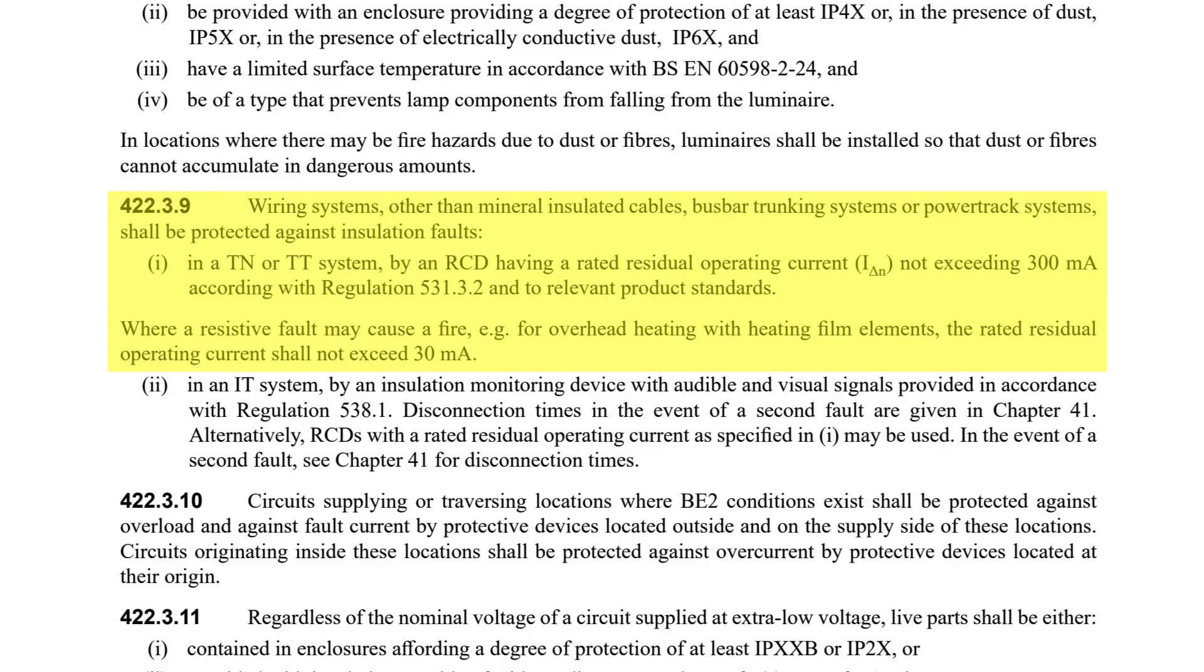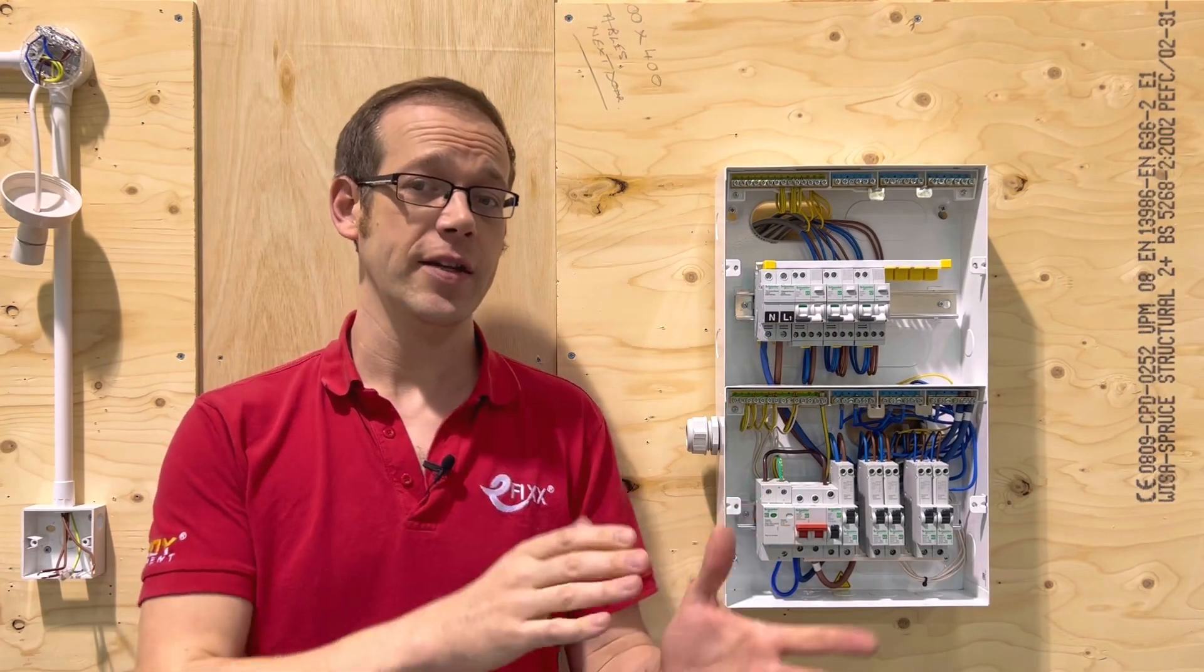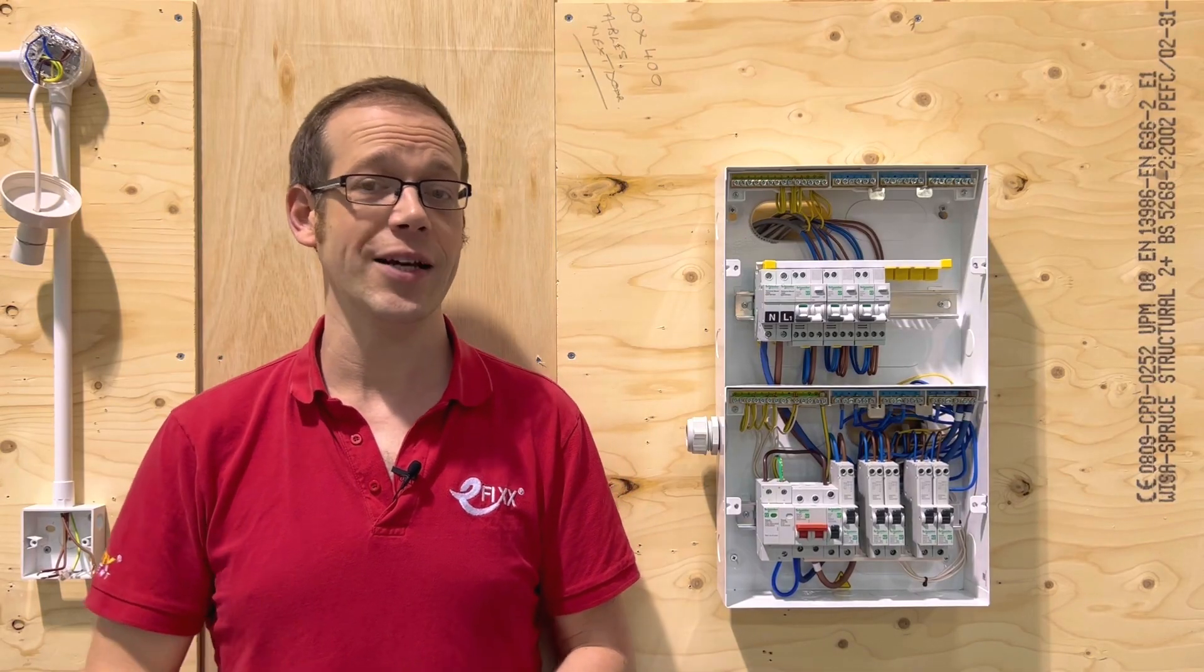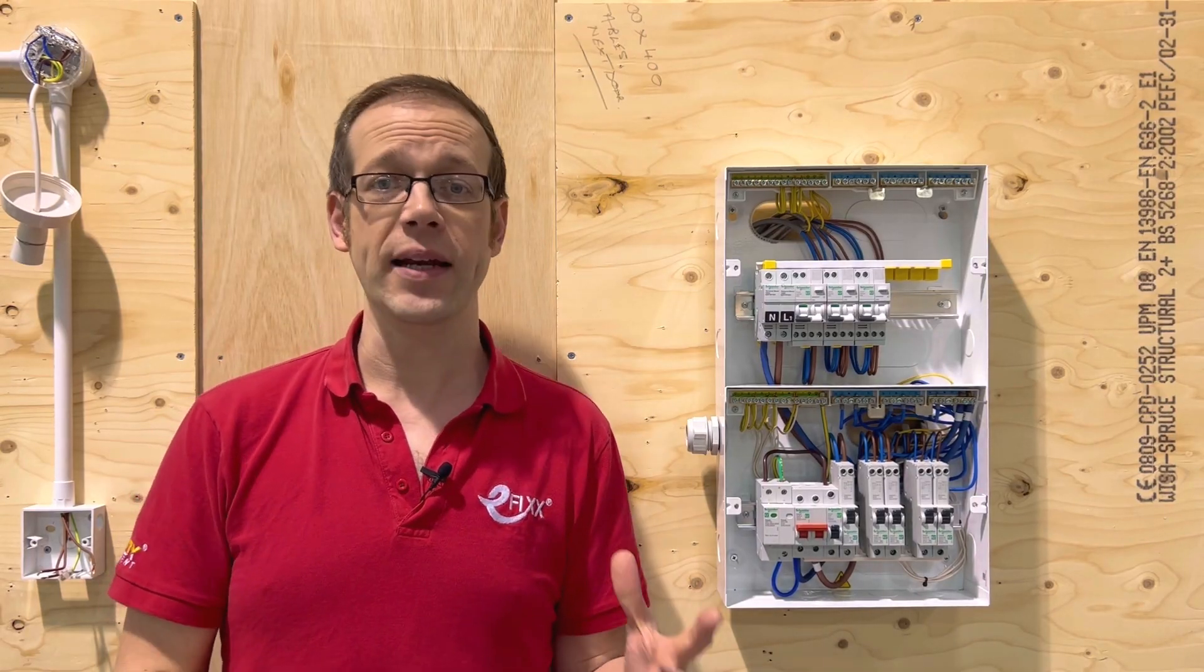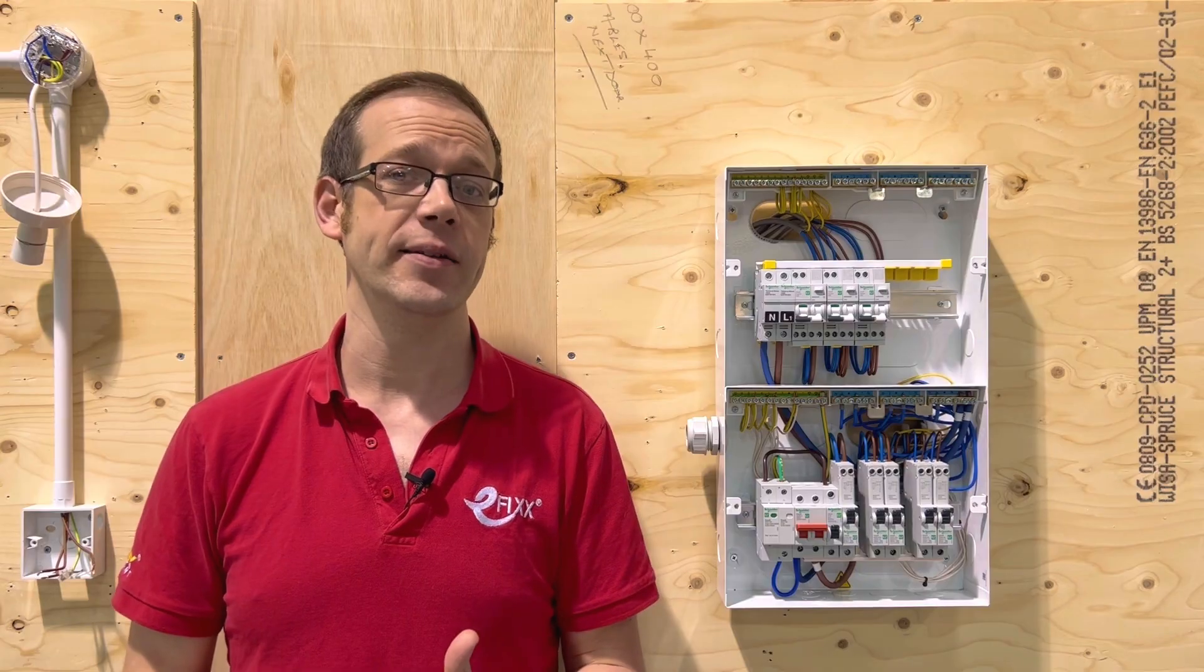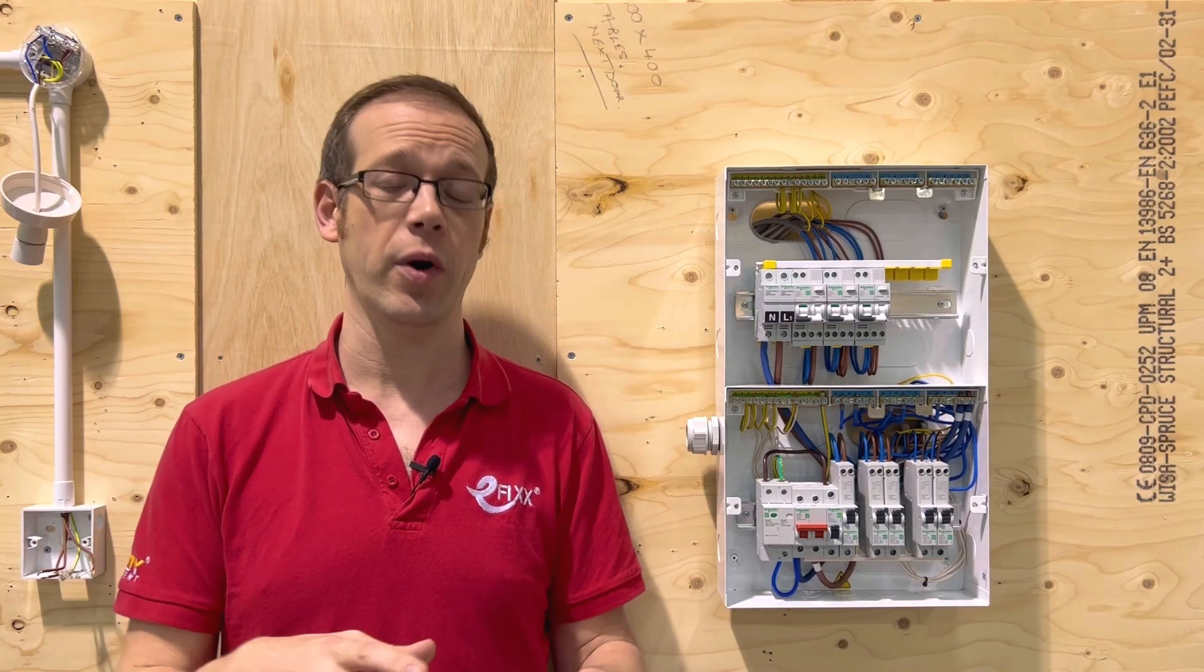Where a resistive fault may cause a fire, e.g. for overhead heating with heating film elements the rated residual operating current shall not exceed 30 milliamps. So it may be again that one of these circuits has a 30 milliamp RCD offering additional protection already but if not then you may need to provide a 300 milliamp RCD to offer protection against faults in the wiring insulation or 30 milliamps in the example given of a heating system that's using film elements overhead.